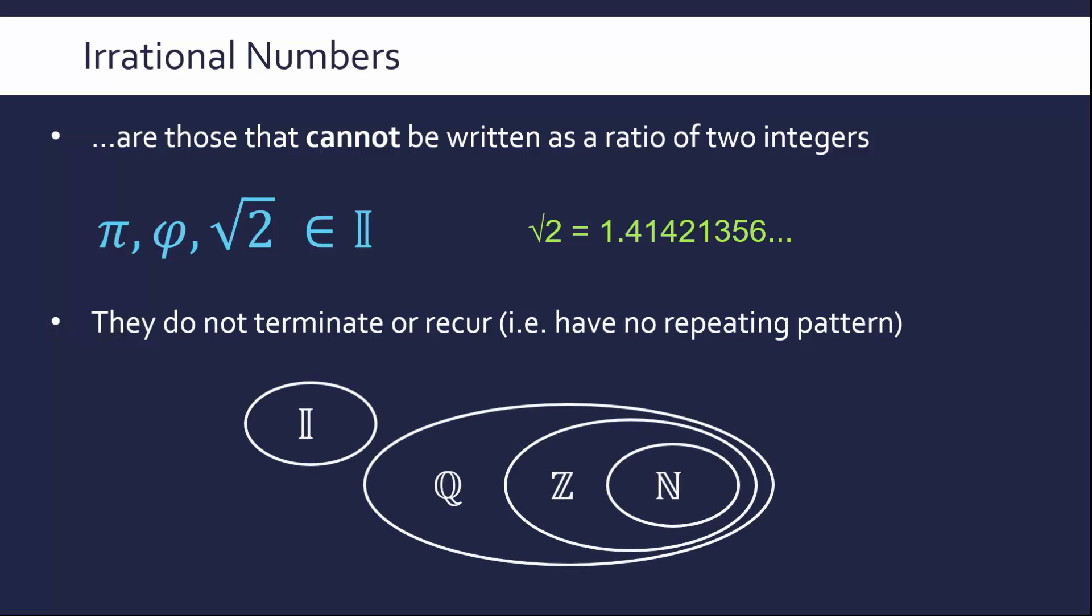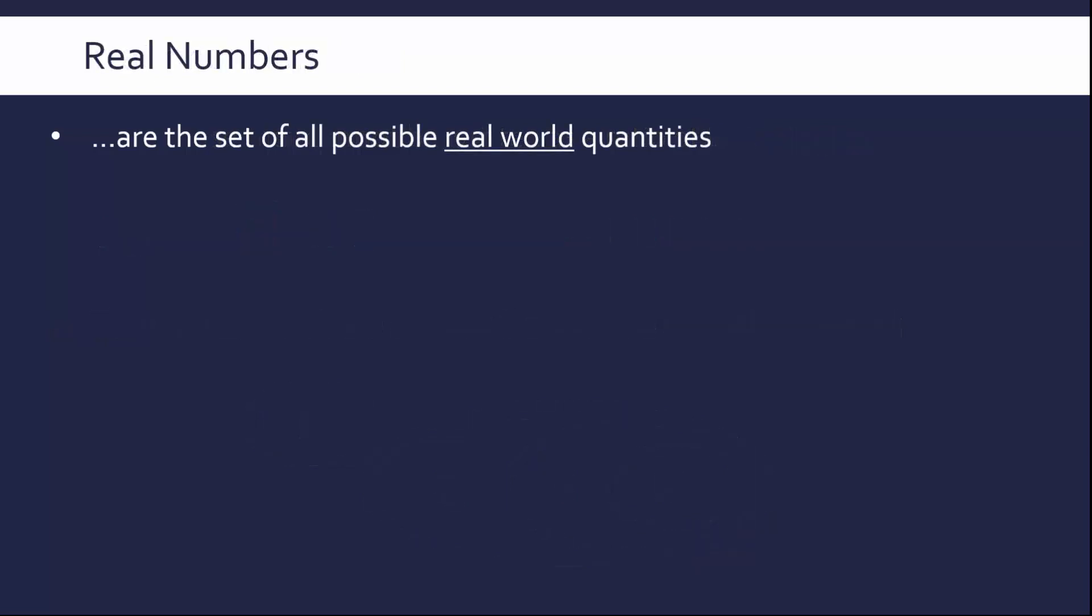These numbers are slightly outsiders to this whole set of numbers. We have our previous sets all relating very nicely, but the irrational numbers do sit outside of this because they don't belong to any of those sets. However, they do belong to the real numbers.